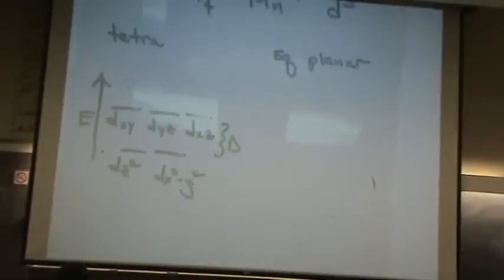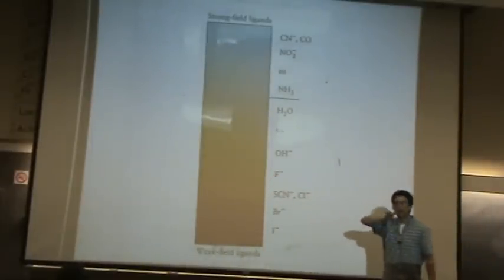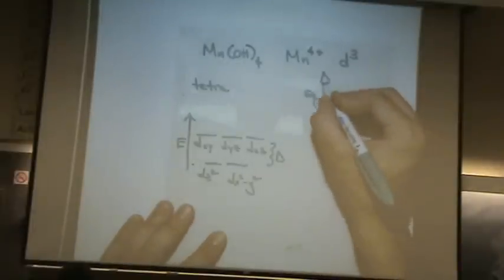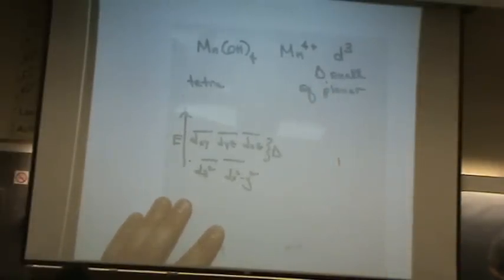Is delta large or small? Well, how do you know that? You go to the, here, you just say, oh, hydroxide's down here, it's below water, or from water and on, we consider it a weak field ligand, so delta is small. So I'll just write up here, delta is small, because we have the hydroxide ligand. So now, that's tetrahedral.